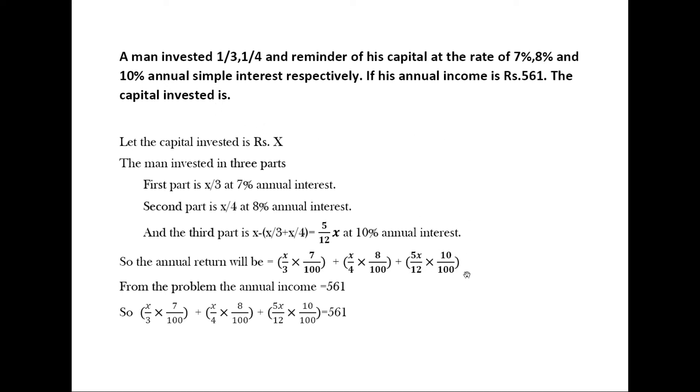From the problem, the annual income is rupees 561, so the addition of all income from all his parts at their respective annual interest rates equals 561.